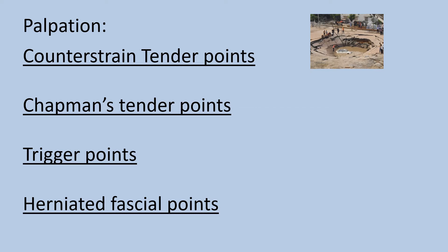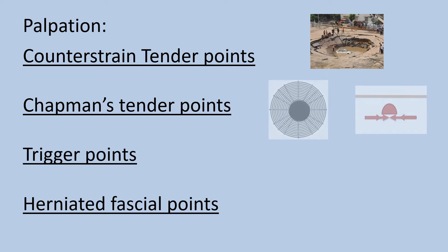A Chapman's point occurs within deep fascia like an aponeurosis or the periosteum surrounding a bone, and feels like taut tissue all contracted towards the center of the point in a plane parallel to the skin, and frequently has a small nub in the center as well. Many texts teach that the small nub is a required palpatory aspect, but clinically it is not.